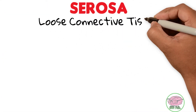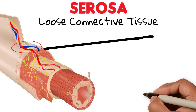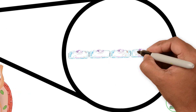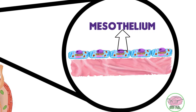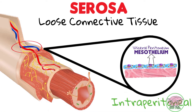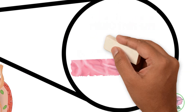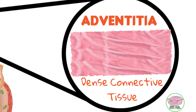Finally, the serosa is a fine layer of connective tissue that contains blood vessels and lymphatic vessels, and is covered in intraperitoneal organs by a simple squamous epithelium known as mesothelium, which also forms the visceral peritoneum. In organs that are not intraperitoneal, the serosa is replaced by a thick layer of connective tissue known as adventitia, which does not contain mesothelium.